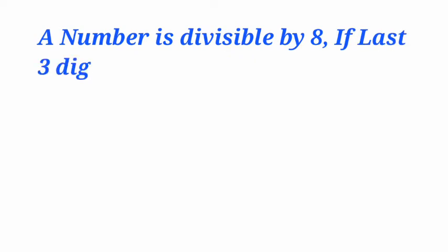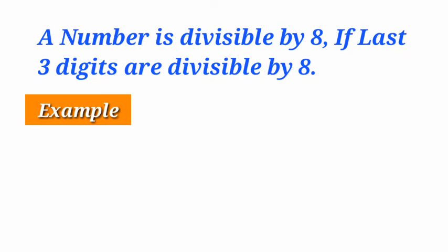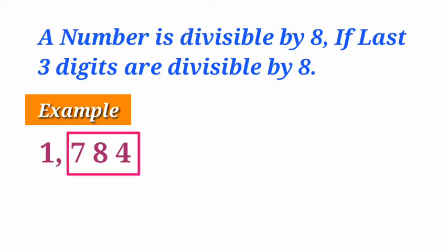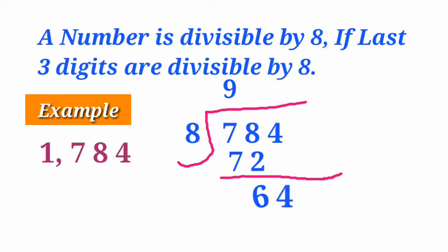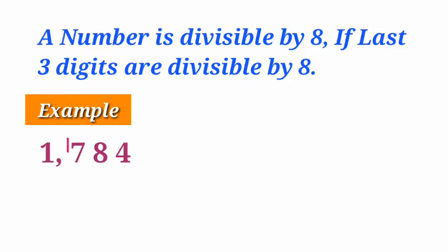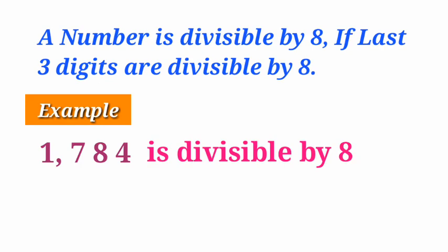Divisibility rule for 8. A number is divisible by 8 if its last 3 digits are divisible by 8. For example, 1784. The last 3 digits are 784. Dividing 784 by 8: 8 times 9 is 72; 78 minus 72 is 6; bring down 4 to get 64; 8 times 8 is 64; remainder is 0. So the last 3 digits are divisible by 8, and 1784 is divisible by 8.